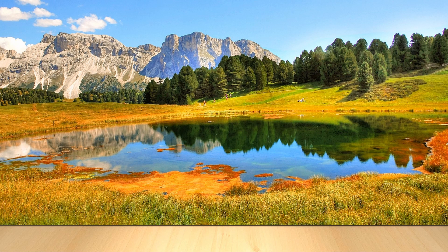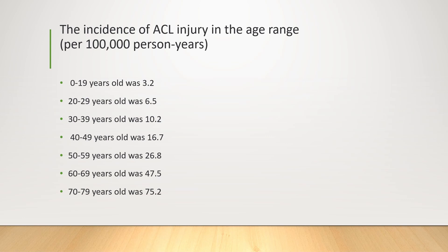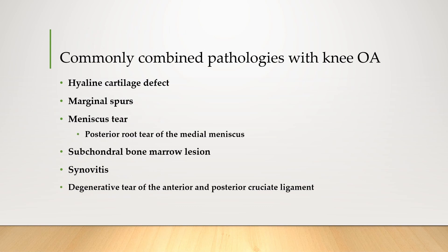I will show the prevalence of meniscus tears again. The prevalence of meniscal tears is notable, particularly among individuals over 80 years of age, with a 56% incidence in men and 49% in women. Furthermore, the prevalence of medial meniscal tears tends to increase with age. The incidence of anterior cruciate injury also increases with age. We have studied many contributing pathologies to knee pain in adults. As a result, it is important to consider various types of pathologies as potential sources of pain during the pain assessment.